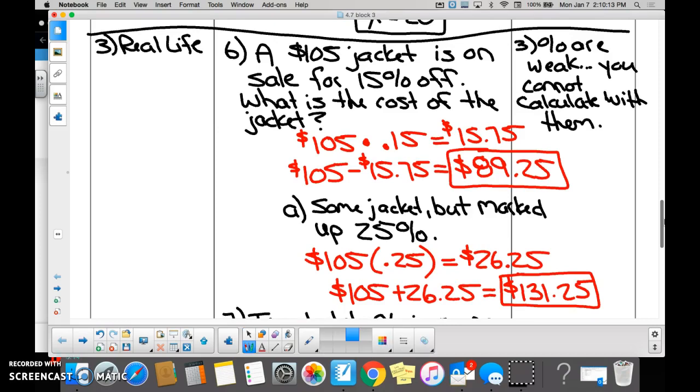So how do you find 15% of 105 dollar jacket? 15% of 105 dollar jacket. What would you do? We multiply, and we got $15.75. Is that the answer? That is how much you're gonna get saved, right? But the question is what is the cost of the jacket. So the sale saves you $15.75, you need to subtract that from the total right there.